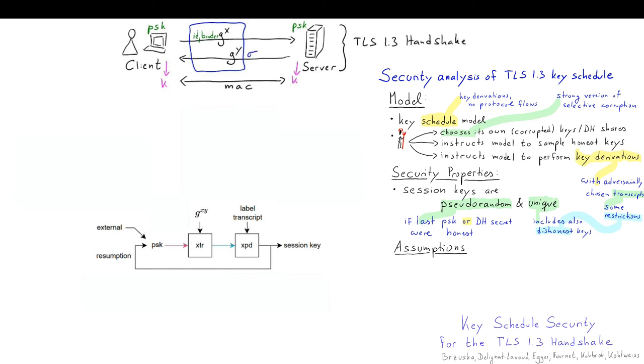In our security analysis we assume that the expand function is a pseudo-random function, that the extract function is a dual pseudo-random function, and additionally we assume collision resistance on the expand function, the extract function, and the hash function involved in the protocol.